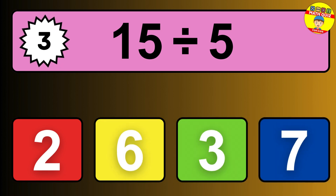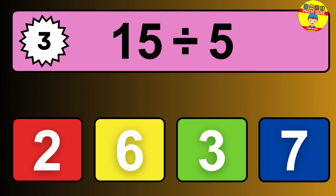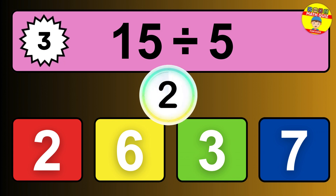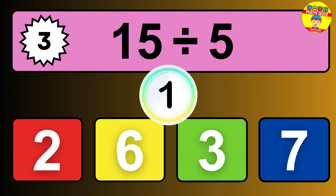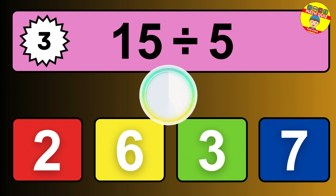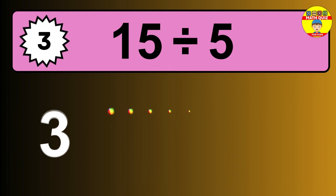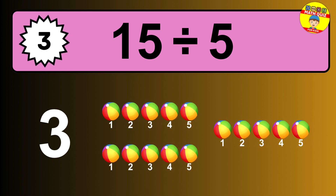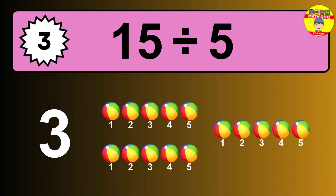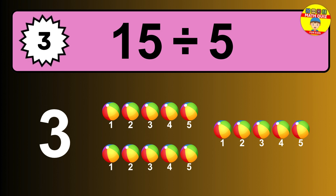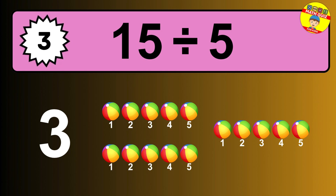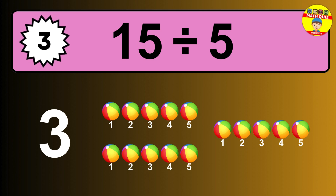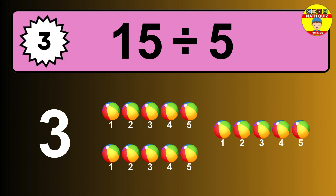15 divided by 5 is... time to think. Let's go to the solution. Divide the number 15 by 5. Each group contains 5 units. So dividing 15 by 5 results in 3 equal groups. Thus, the result is... 15 divided by 5 equals 3.